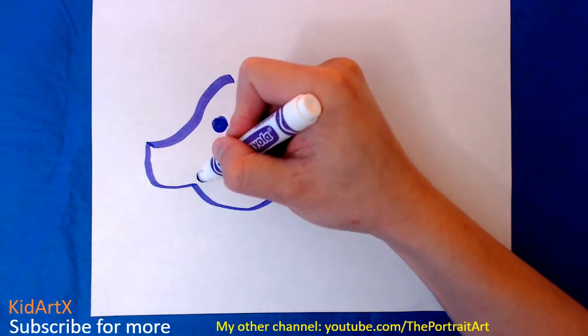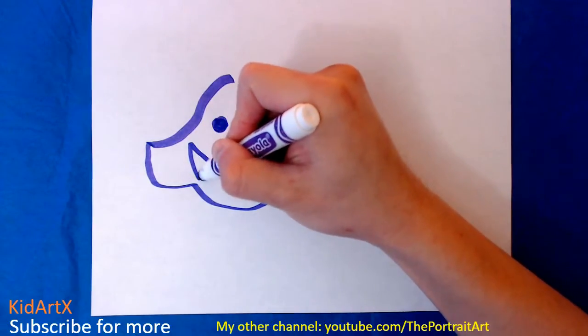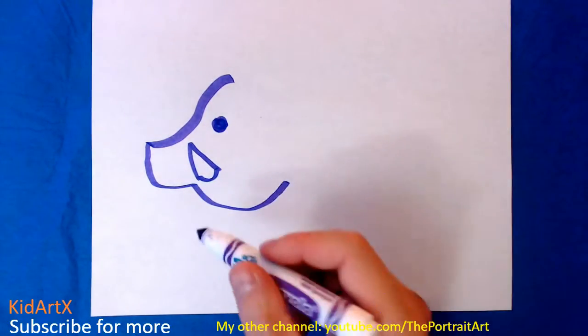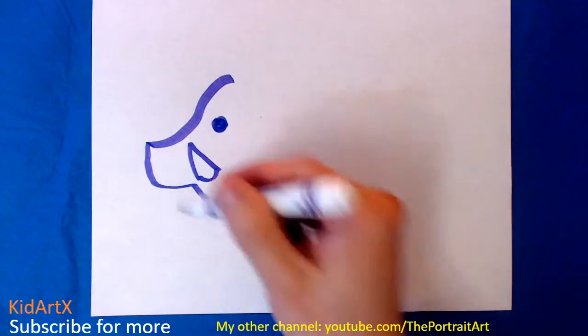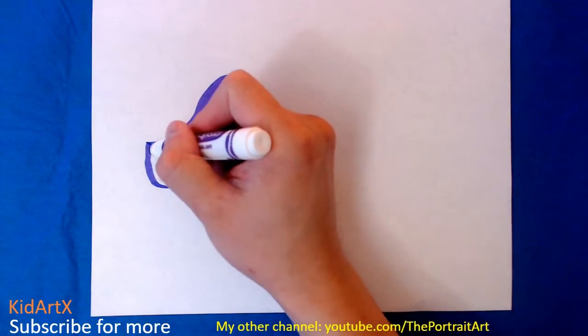Since it's a boar, let's draw teeth like that. This part is optional - if you want a regular pig, you can just ignore that part. Maybe you can add something like this.